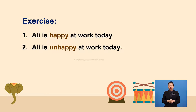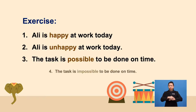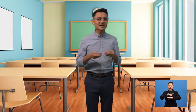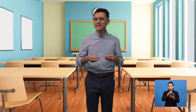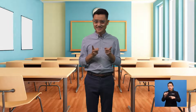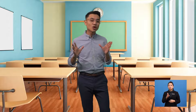Next one: 'The task is possible to be done on time.' 'The task is impossible to be done on time.' That's a really easy exercise, right? Your answers should be this — look at the screen to check your answers.